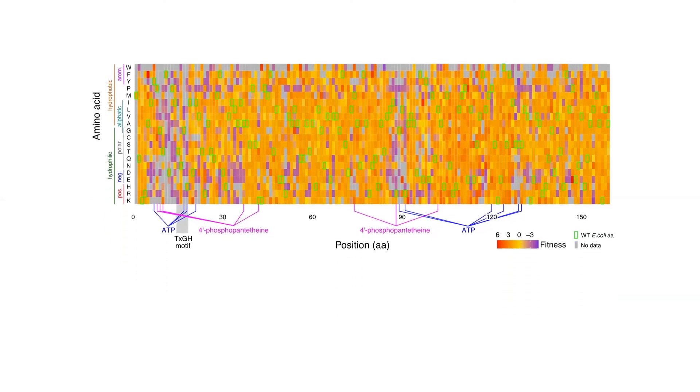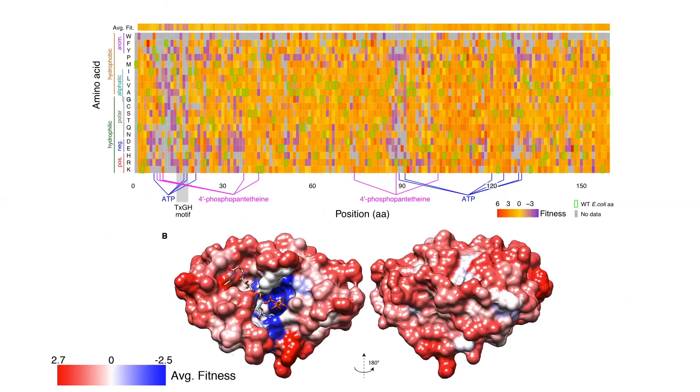And so without going into this in too much detail, we see the traditional conserved, highly constrained mutations around the catalytic site, and very interestingly, very promiscuous regions around certain other regions which are in at least E. coli known to interact with some of the substrates.